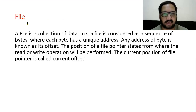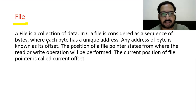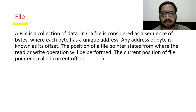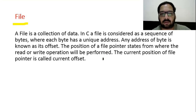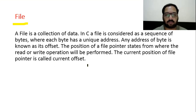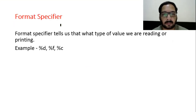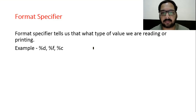File: in file handling, a file is basically a collection of data. In C, a file is considered as a sequence of bytes where each byte has a unique address. Any address of a byte is known as its offset. The position of a file pointer states from where the read or write operation will be performed. In the file handling video, we used a file pointer declared with capital FILE, which tells us at what position to perform reading/writing operations.